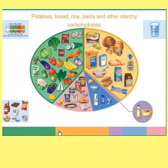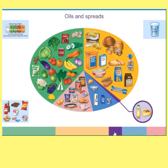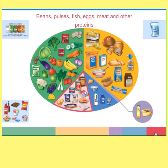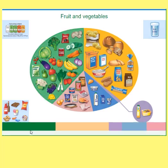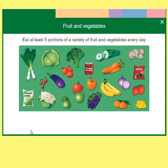This interactive Eat Well Guide is quite useful — you can click on the different sections and find out a little bit more information, then identify them on the Eat Well plate. Starting with fruit and vegetables: it says you need to eat at least five portions of a variety of fruit and vegetables every day, and there are some suggestions of what those fruit and vegetables might include.